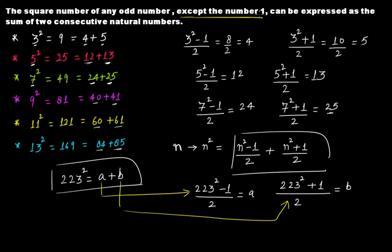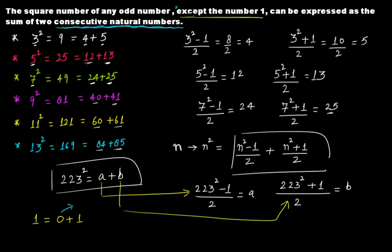Now, why is the number one excluded? Some of you might say: can't we write 1² = 0 + 1? We do have two numbers and they are consecutive, but notice the statement says consecutive natural numbers. Zero is not a natural number, and that is why the pattern is stated as applying to any odd number except the number one.